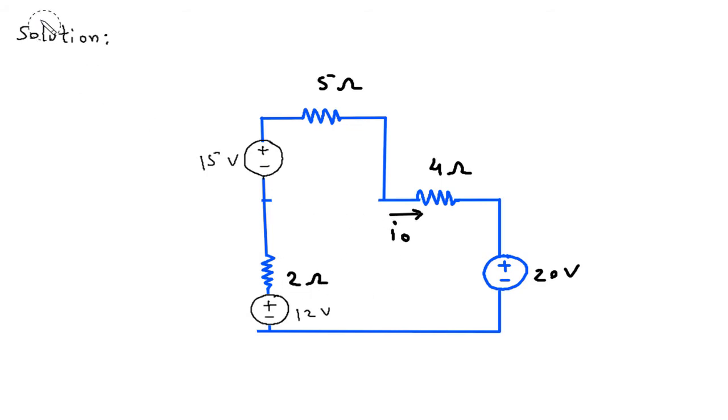Now here we can apply KVL. So this is current I O, this will be positive, this will be negative, positive, negative. Here this will be positive, negative.